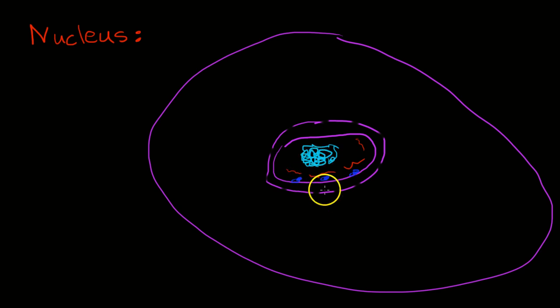You'll notice here that the pores will actually allow the RNA to move out. It's interesting because these pores connect to another very important structure within the cell called the endoplasmic reticulum.